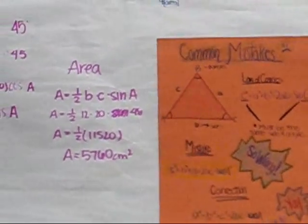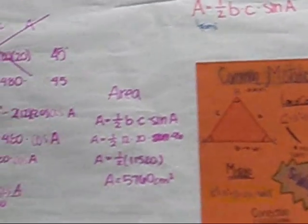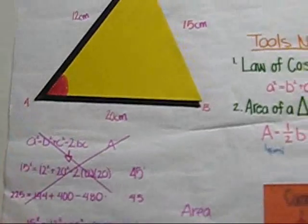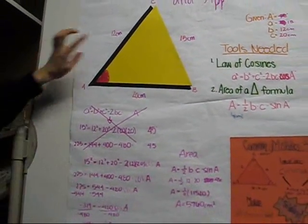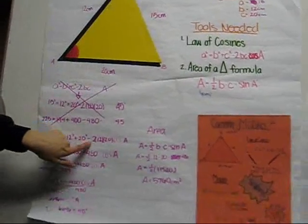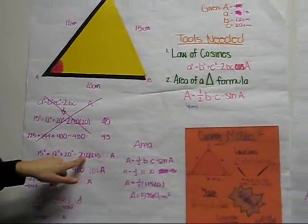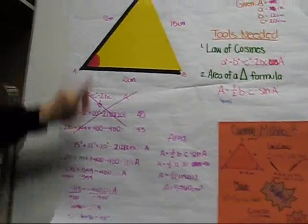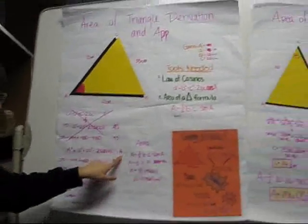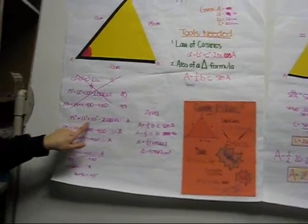And one of my examples is 15 squared, which is right here, 7 meters, equals 12 squared, which is right there, plus 20 squared minus 2 times 12, which is the side b, times 20, which is side c, times cosine of a.